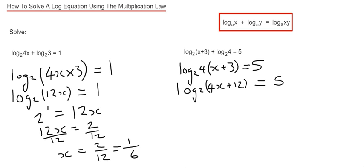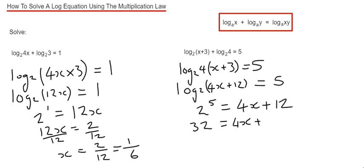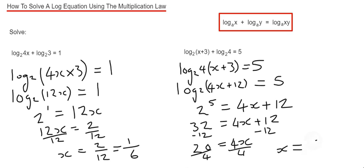So again, we can write this in power format. If we say 2 to the power 5 equals 4x plus 12. Now 2 to the power 5 is 2 times 2 times 2 times 2, which is 32. Then we've just got to solve this equation — take 12 off both sides, that gives us 20 equals 4x. Divide by 4 on both sides, and that gives us x equals 5.